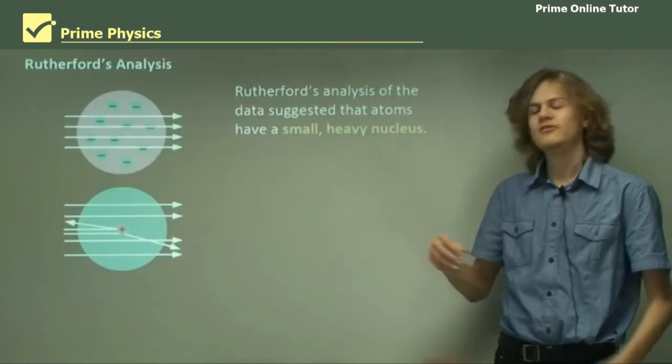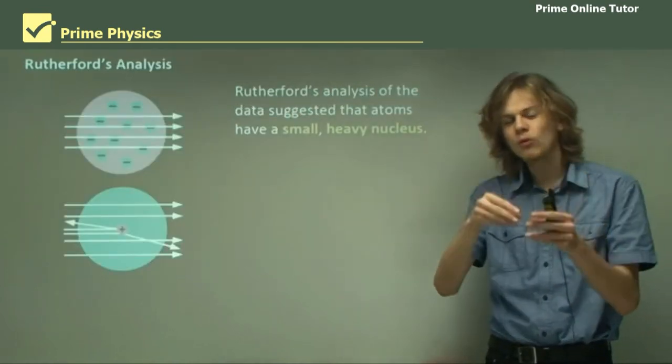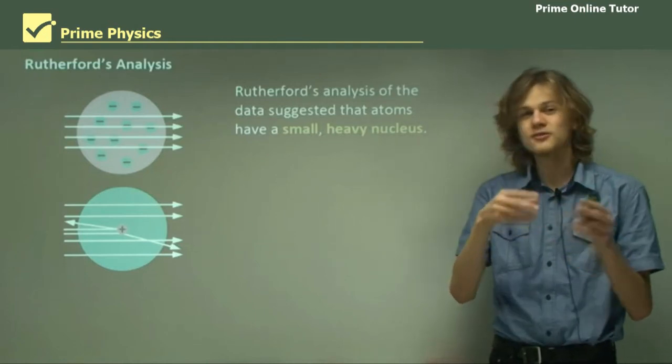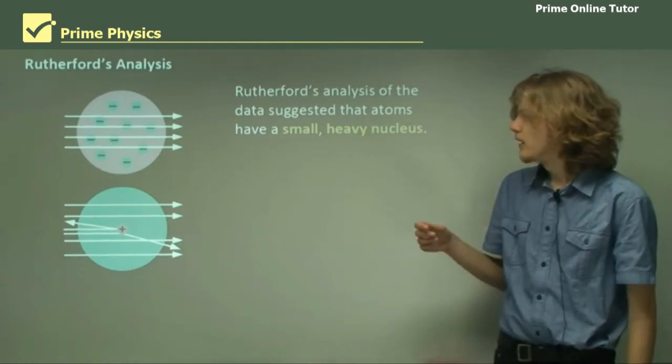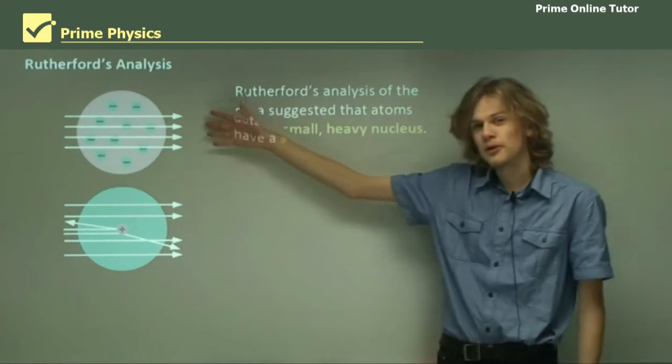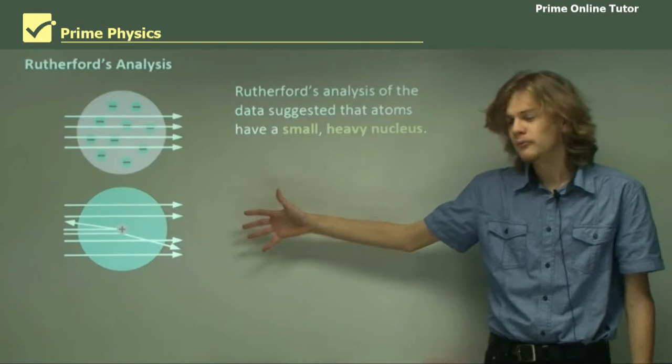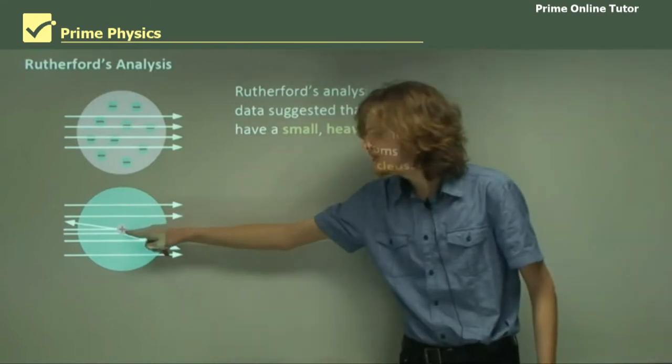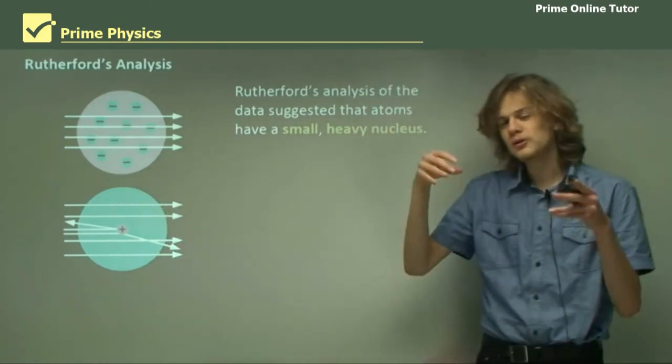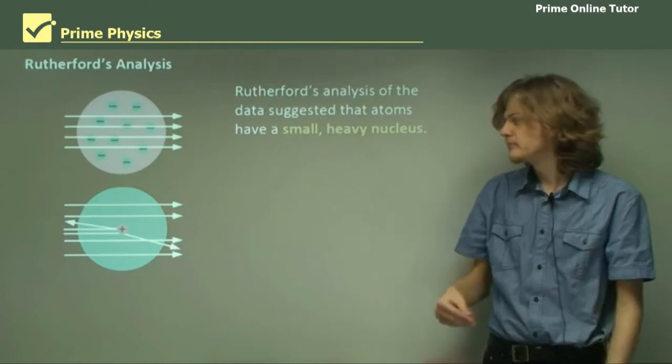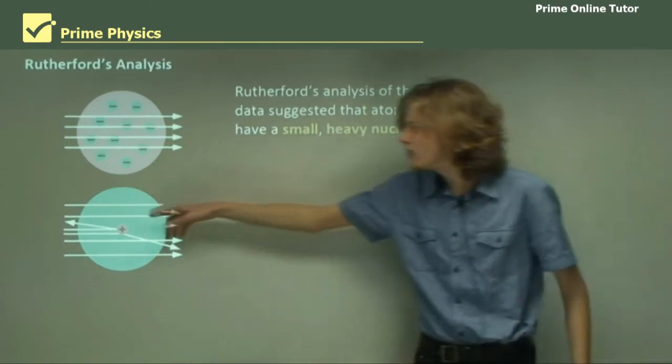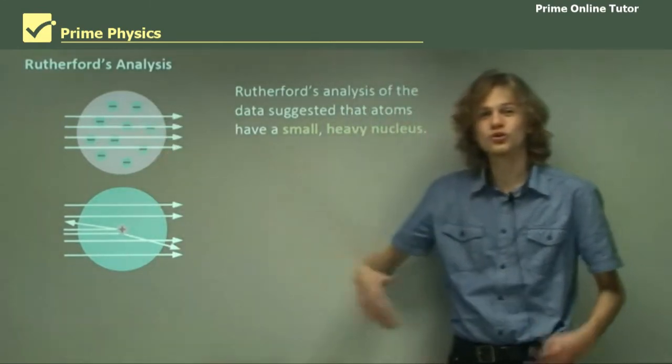Rutherford's analysis of the data suggested that the atoms have a very small, very dense, positively charged nucleus. Here's the original Plum Pudding model, which had lots of electrons embedded inside a sphere. And here's Rutherford's model, where we have one tiny little dense bit, a nucleus, right in the middle of the atom. It would explain why the alpha particles were sometimes deflected almost straight backwards.